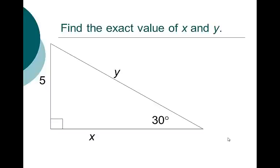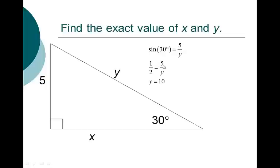Find the exact value of x and y. I've got a 30 degree angle, I've got a side of 5, an x, and y for the hypotenuse. So I say sine of 30 is opposite over hypotenuse, which is 5 over y. I go to my chart and see that sine of 30 is 1/2. I set that equal to 5 over y and cross multiply. That gives the exact answer — it's 10.